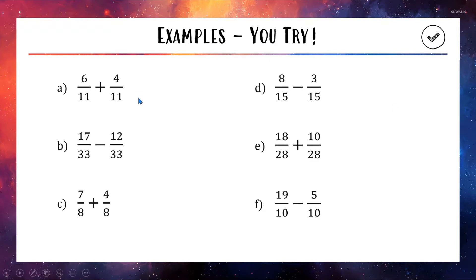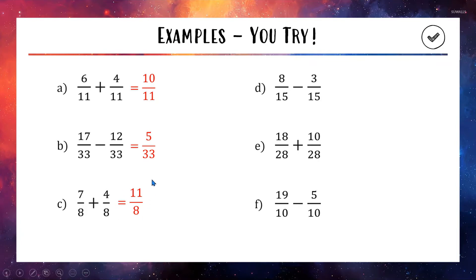For A, the base stays as 11 and 6 plus 4 is 10, so the answer is 10 out of 11. For B, 17 take away 12 is 5, giving 5 out of 33. For C, we're over 8 and 7 plus 4 equals 11, giving the improper fraction 11 over 8 — which is perfectly correct. If you prefer, you can write it as the mixed numeral 1 and 3 over 8, since 8 goes into 11 once with 3 left over.